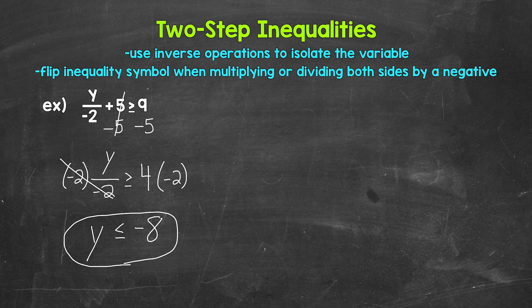So y is less than or equal to negative eight — y can be any value less than or equal to negative eight. As far as that inequality symbol flipping: basically, as soon as we multiplied both sides by a negative — negative two for this example — that inequality symbol flips in order to keep the inequality true.